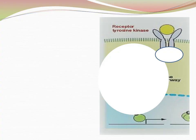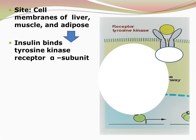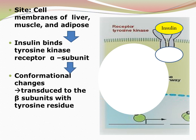Insulin is known to bind to its receptor, which is called the tyrosine kinase receptor. This tyrosine kinase receptor has one alpha subunit and one beta subunit. The alpha subunit is the one which binds with insulin. Once it binds, it brings about a conformational change that is transmitted to the beta subunit. The beta subunit has tyrosine residues — tyrosine is an aromatic amino acid with an OH group.